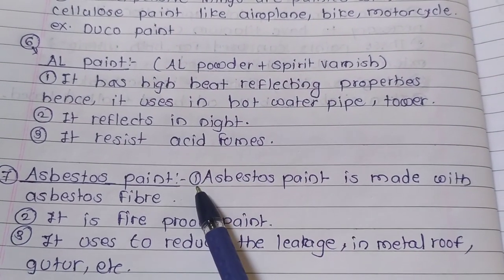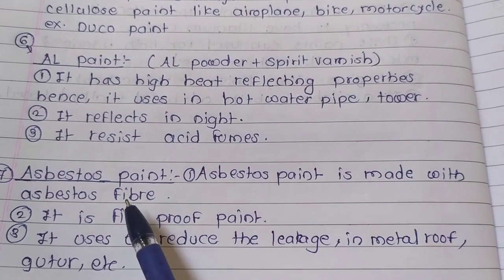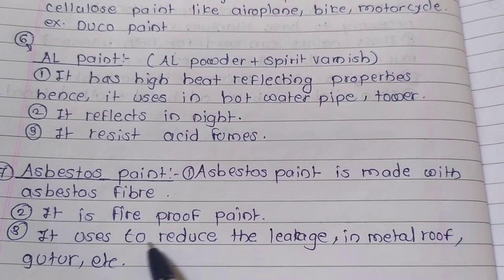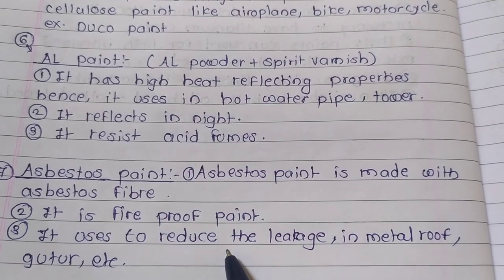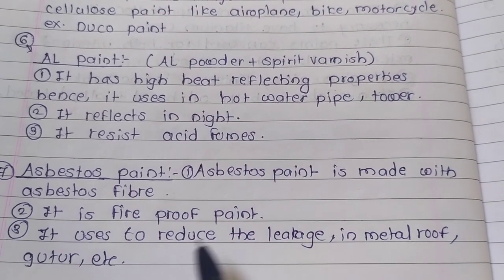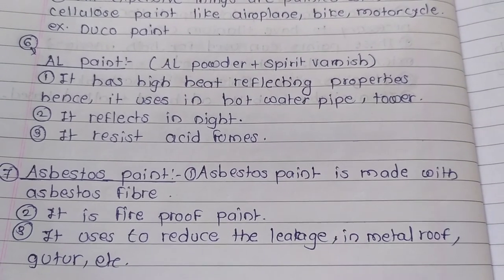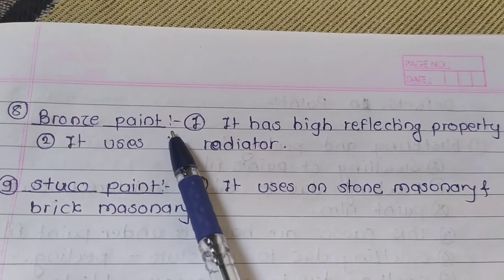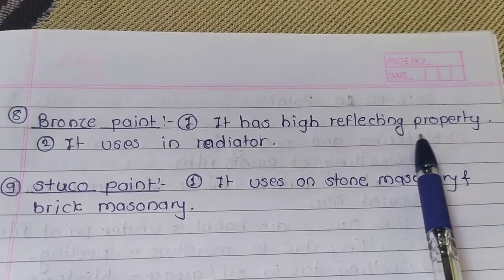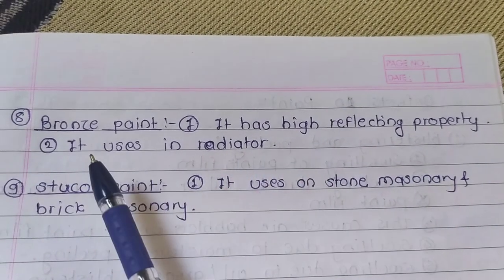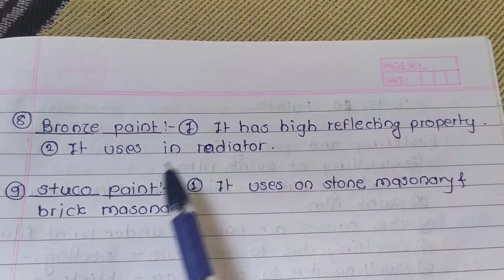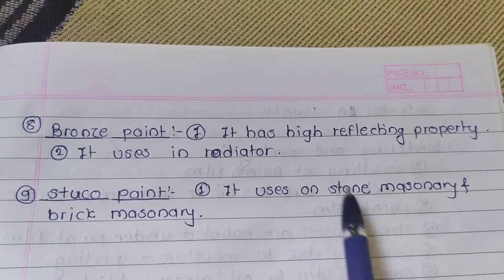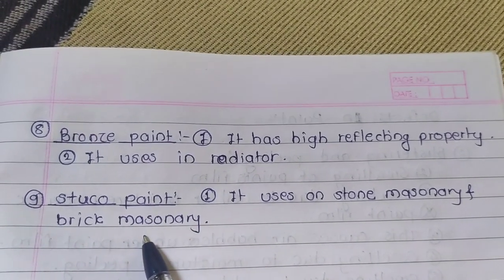Asbestos paint is made with asbestos fiber. It is a fireproof paint and is used to reduce leakage in metal roofs and gutters. Bronze paint has high reflecting properties and is used in radiators. Stucco paint is used on stone masonry and brick masonry.